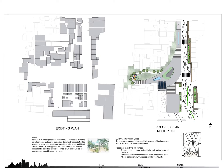The existing site comprises of temporary structures which are used as shops for clothing, shoes, and second-hand goods. The shops on the opposite side comprise of temporary shops used for daily necessaries, but they are in better condition compared to the shoes and clothing area.